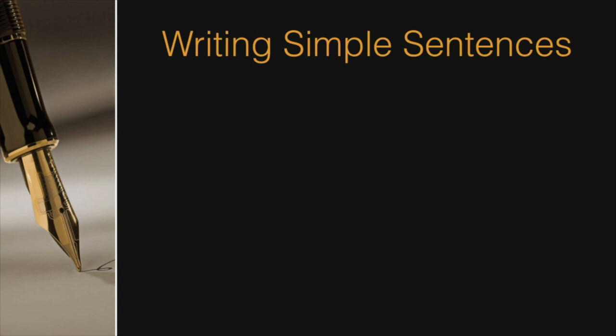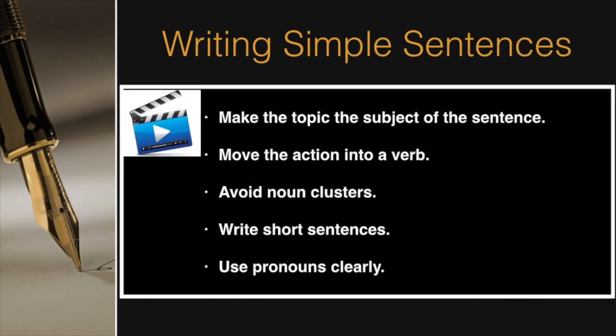So far we have seen five simple techniques on how to make sentences simple and direct. These techniques are: Make the topic the subject of the sentence, Move the action into a verb, Avoid noun clusters, Write short sentences, And use pronouns clearly. Links to the corresponding videos are in the description beneath this video on YouTube.